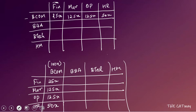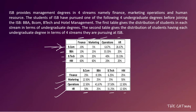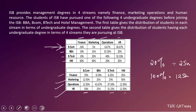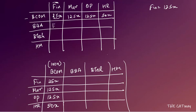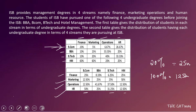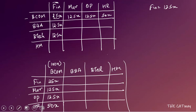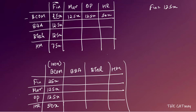In Finance, BCom students are 20% of the total. We know that 20% equals 25x, so the total for Finance = 125x. Checking: 10% BBA → 12.5x, 10% BTech → 12.5x, and 60% Hotel Management → 75x (60% of 125x). All figures are consistent.